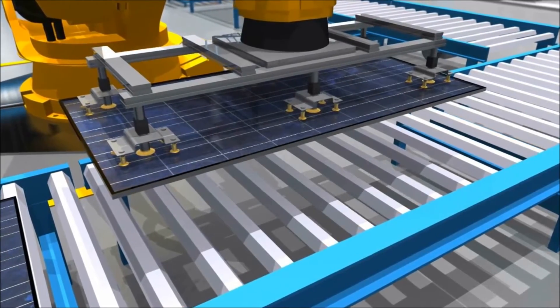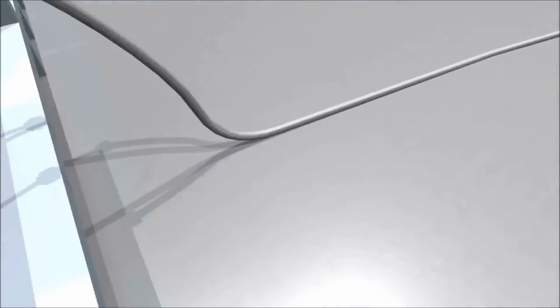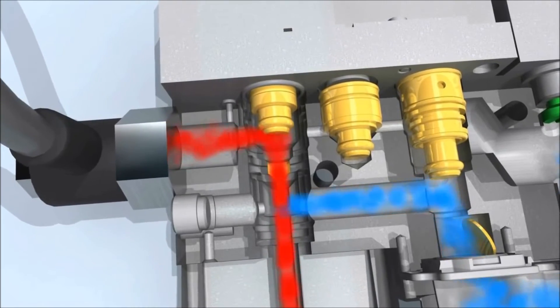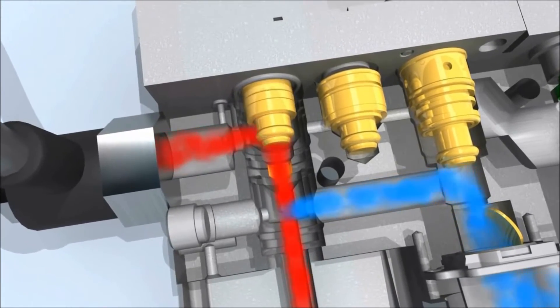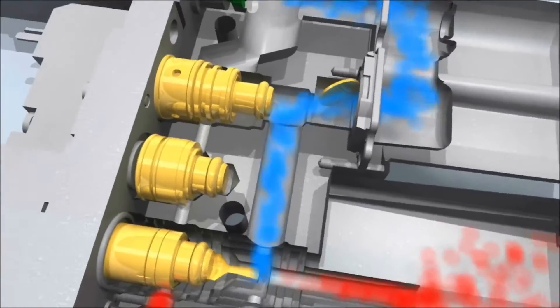If the pressure continues to sink, the stream of compressed air is interrupted by a valve, and a stop valve seals the area with the underpressure airtight.